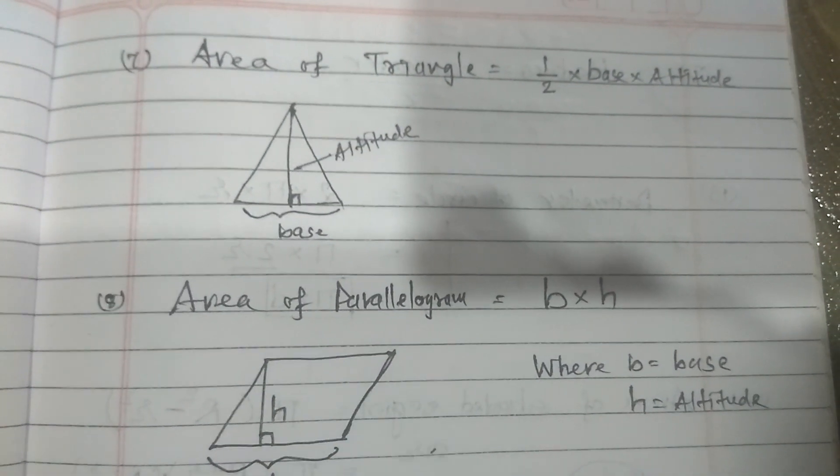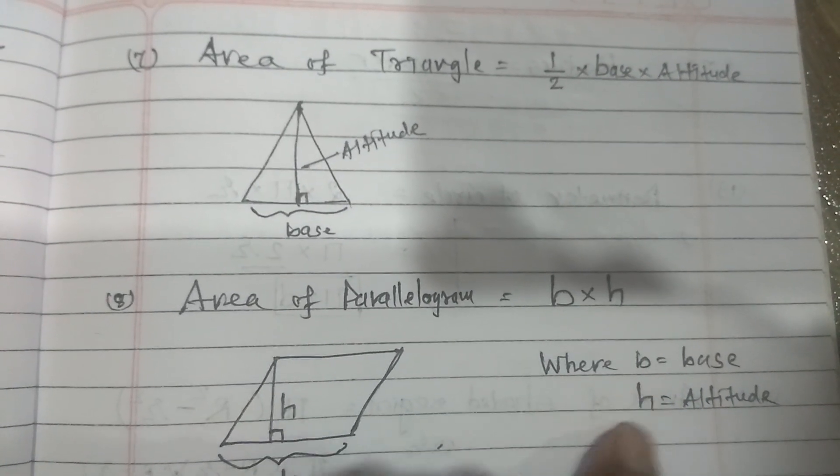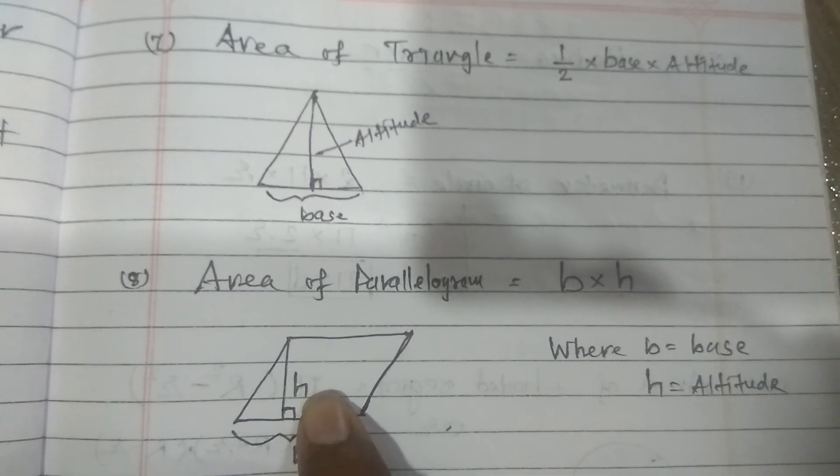Now in case of parallelogram, area of parallelogram is equal to base multiplied by altitude. Base is represented by B, altitude is represented by H.